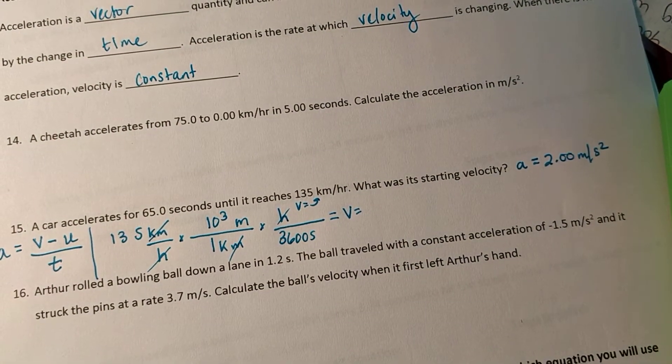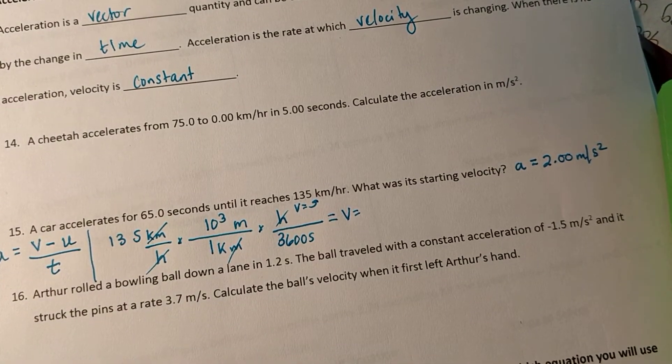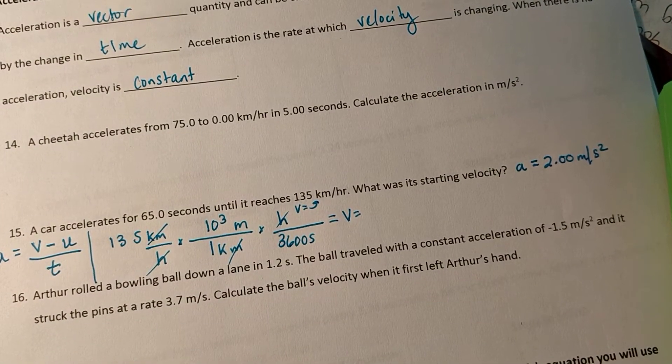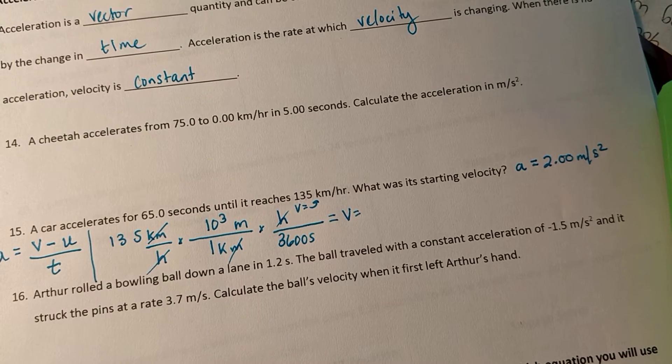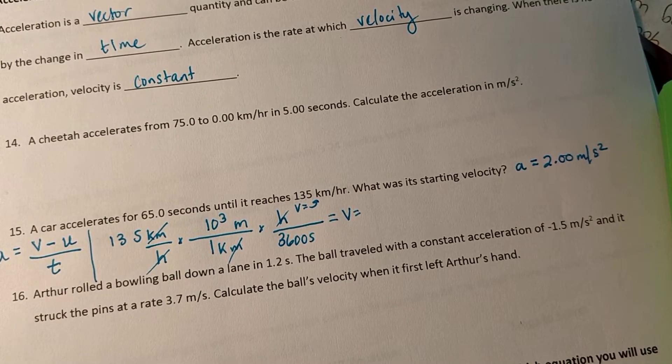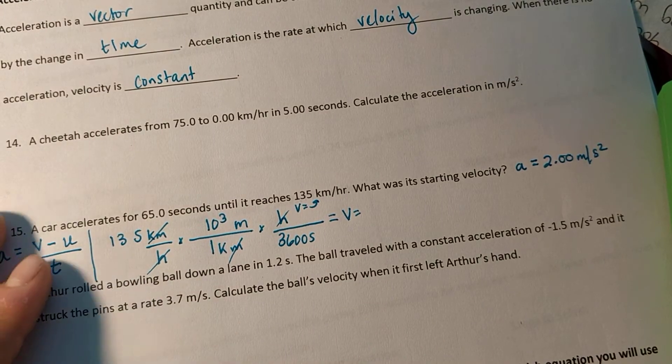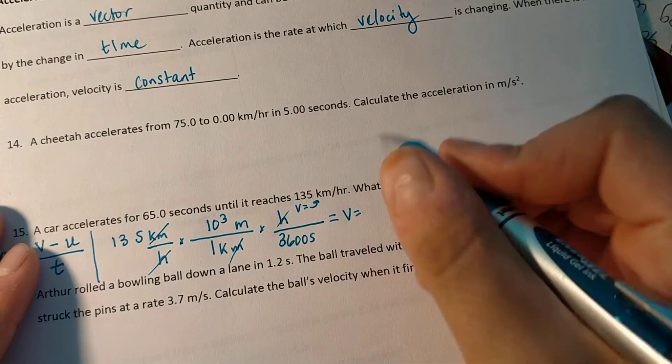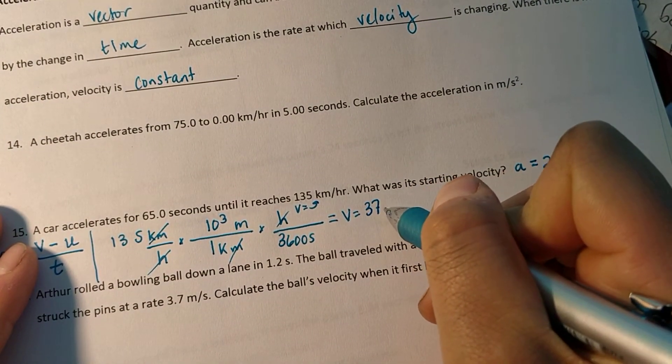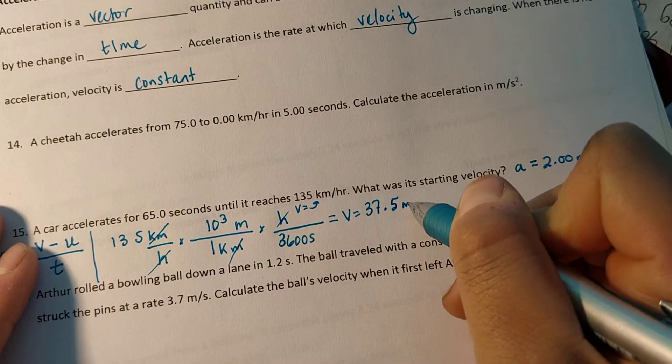135 times 1,000 times 10 to the third divided by 3,600. And I get 37.5 meters per second.